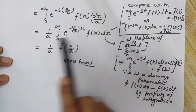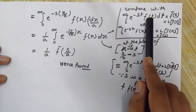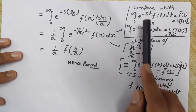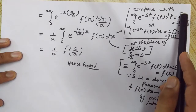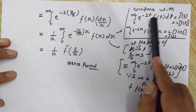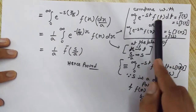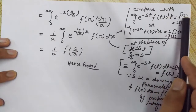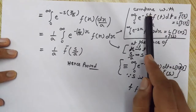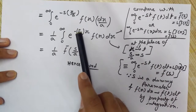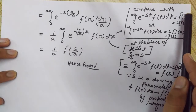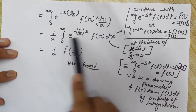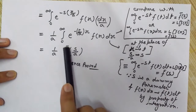Now compare this with the definition of the Laplace transform. The Laplace transform of f(t), denoted F-bar(s), equals the integral from 0 to infinity of e to the power minus s*t times f(t) dt. In our expression, at the place of f(t) dt we have f(x) dx, and at the place of s we have s/a. So this is nothing but (1/a) * F-bar(s/a), comparing with the definition. Hence it is proved.